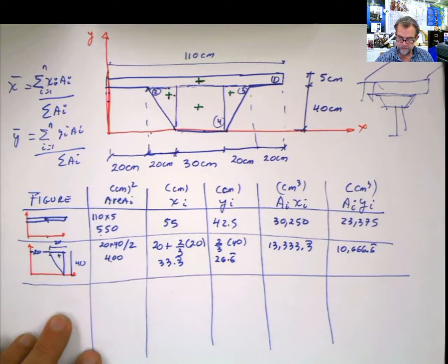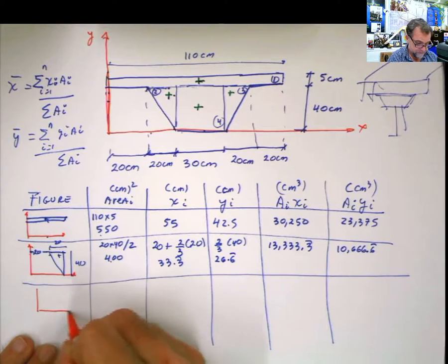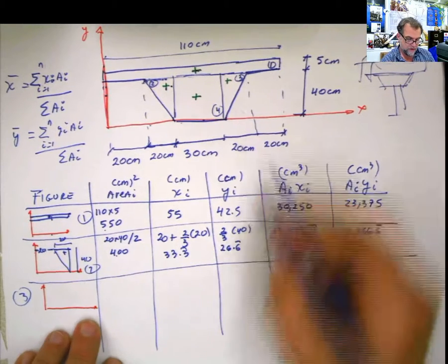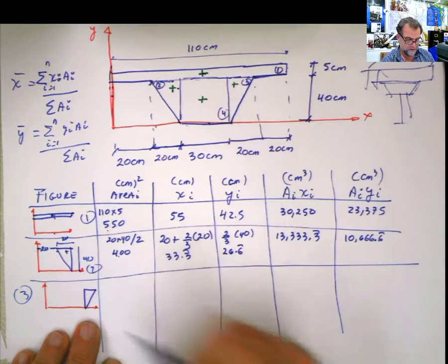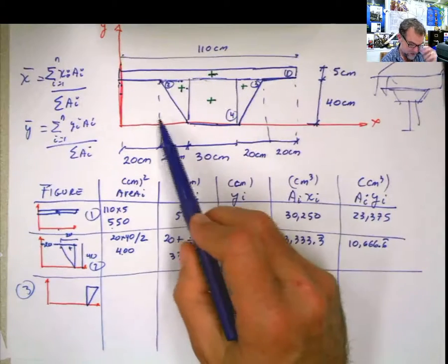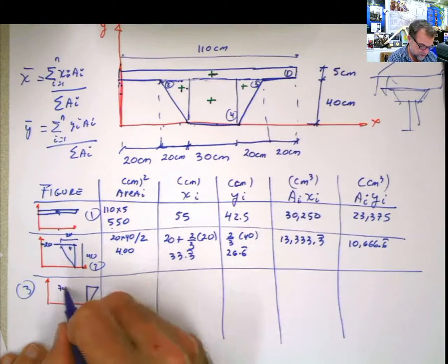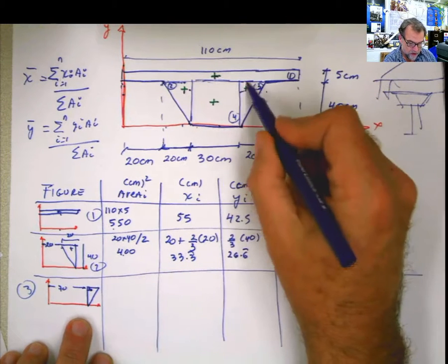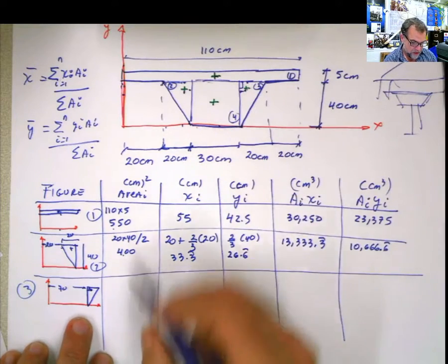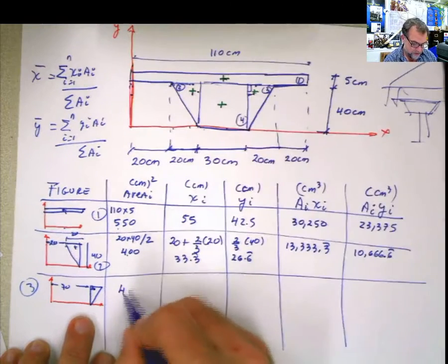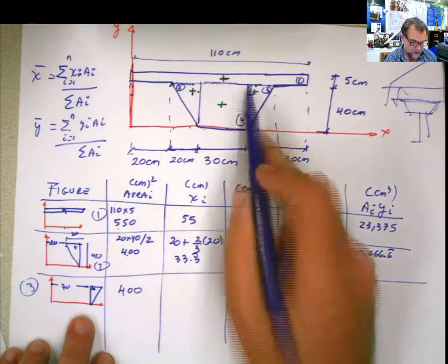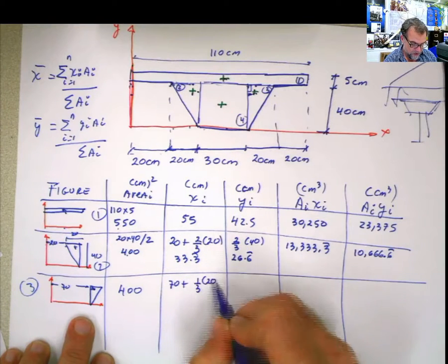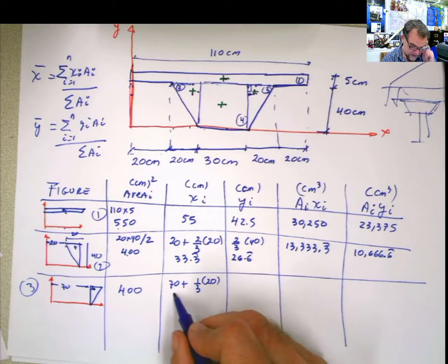Next figure. Next figure is figure 3. Figure 3. What is figure 3? This triangle. And the triangle is somewhere there. And the distance from here to there is 20 plus 20, 40 plus 30, 70. From here to there. And my centroid is here, which is 1 third now. This is 1 third because this is the right angle. So let's start with the area. The area is the same one because it's the same shape, 400. x now, 20, 40, 70 up to that point. Plus from here to here is 1 third of the base, which is 1 third of 20. And that is 76.6 periodic.